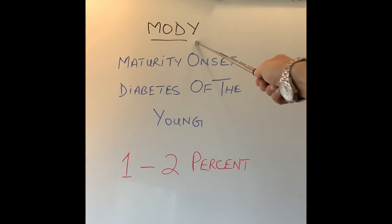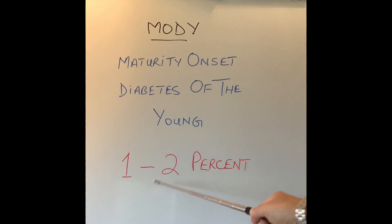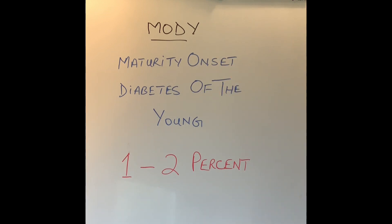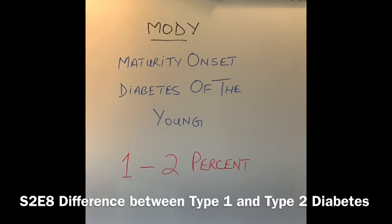This is called MODY for short. It is a very rare form of diabetes — if 100 people are diagnosed with diabetes, only one or two will have this type. You should not confuse it with type 1 or type 2 diabetes, which are different diseases. However, the presentation, side effects, and complications are very similar. If you don't know what diabetes does to our body or how it can affect us, please do watch my links in the videos below.